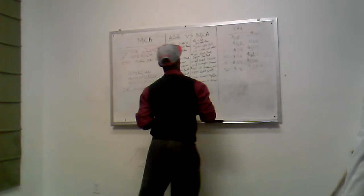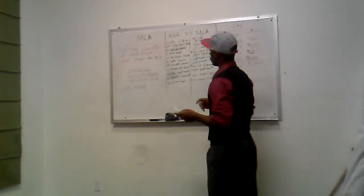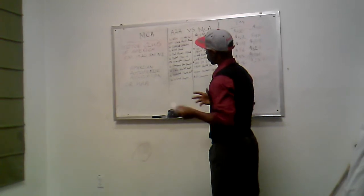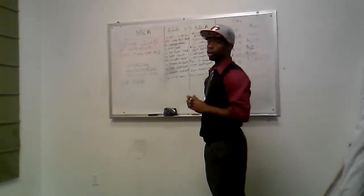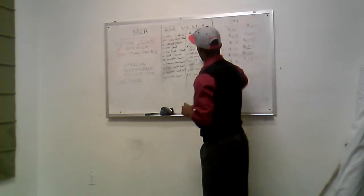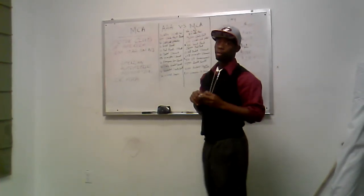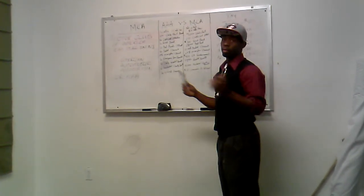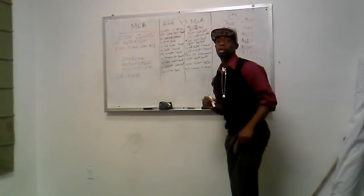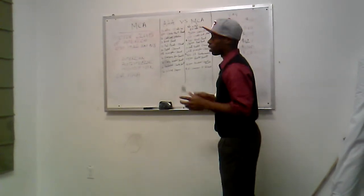Looking at the benefits and how AAA compares to MCA: Number one, with AAA you get three calls for towing up to 100 miles a year. With MCA, there is no cap. There's no limit to how many calls you can make. It's up to 100 miles, but you can call them 50 times and you won't get charged.